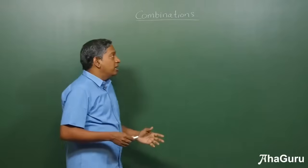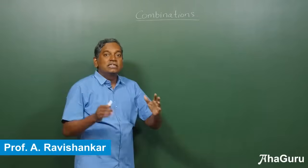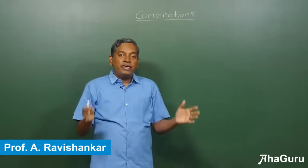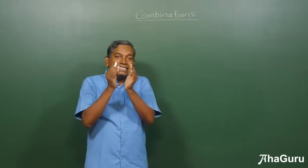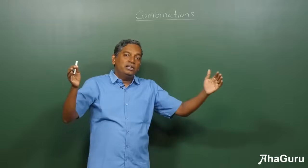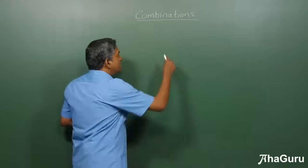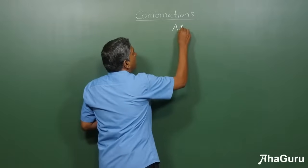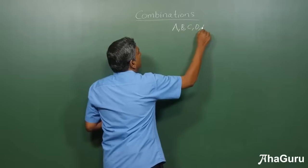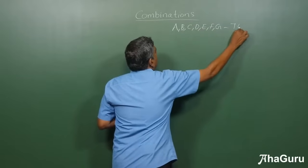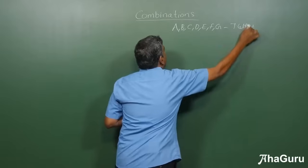In this video, we are going to learn about the concept of combinations, that is, the number of ways of selecting some objects from a larger group of objects. So let's say that we have the letters A, B, C, D, E, F, G. So we have 7 letters.